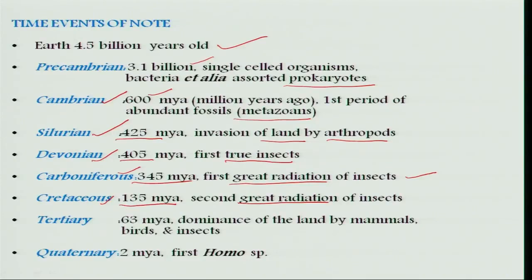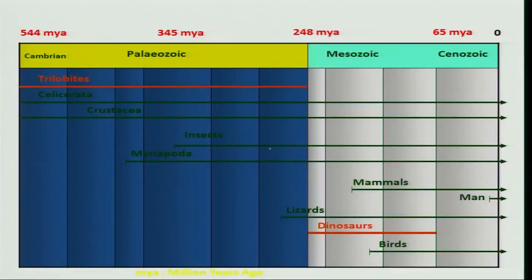I will explain about these two great radiations in the coming slides. In comparison, around 63 million years ago in the Tertiary period, the world was dominated by mammals and birds along with insects, and we human beings have barely evolved since 2 million years ago. This diagram further speaks about the evolution of insects in close relation to other organisms such as myriapods and crustaceans, which are sister groups of insects, starting around 400 million years ago, while dinosaurs appeared in the middle and then became extinct, compared to man who has most recently evolved.